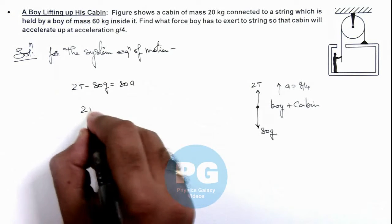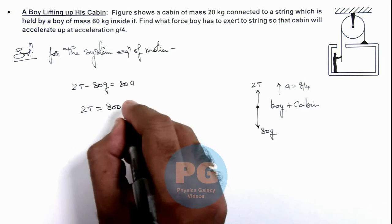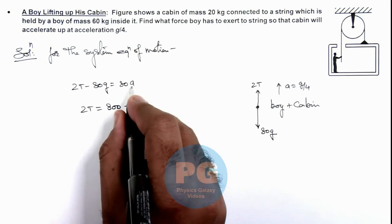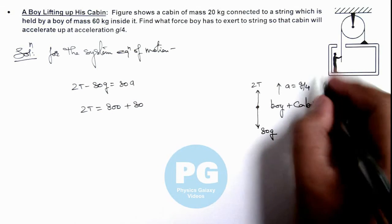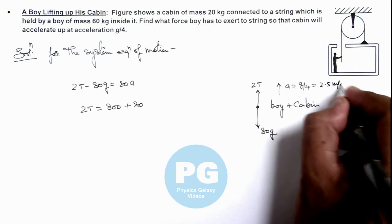So here the value of 2T we are getting is 80g, that is 800, plus 80 times a. Acceleration we are given as g by 4. If we take g as 10, this is 2.5 meters per second square.